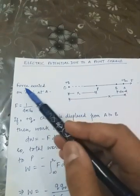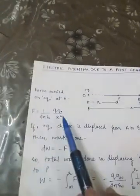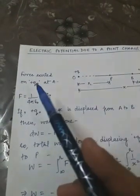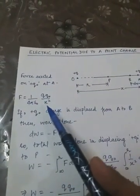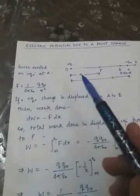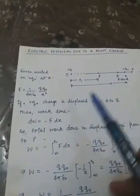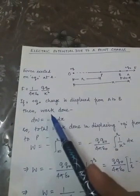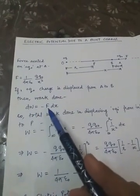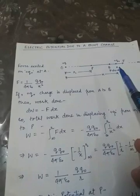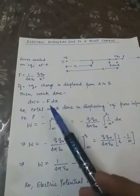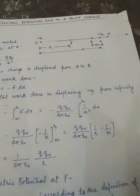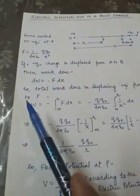The force exerted on plus Q naught at point A, according to Coulomb's law, is F = (1 / 4πε₀) × (Q Q naught / x²), since the distance from O to A is x. When plus Q naught is displaced from A to B, the work done is equal to minus F dx, because the direction of force and displacement are opposite to each other, which is why the work done is negative.